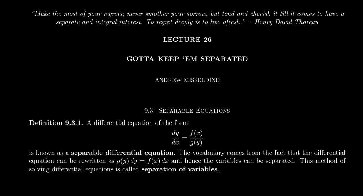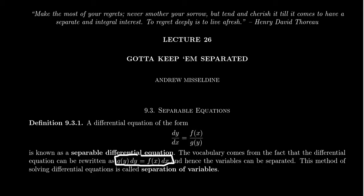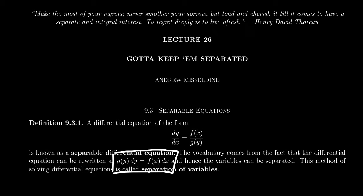The reason we can do that is because if you cross multiply, you end up with the equation of the form g of y dy equals f of x dx. This is significant because when you separate the variables, the left-hand side only depends on y and the right-hand side only depends on x. You can integrate the left-hand side with respect to y and the right-hand side with respect to x, and that can help you solve your differential equation. This technique is referred to as separation of variables.